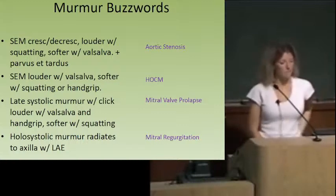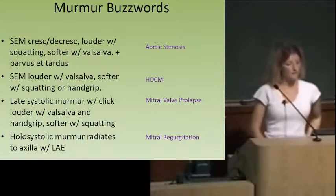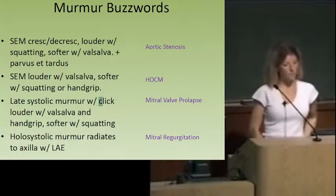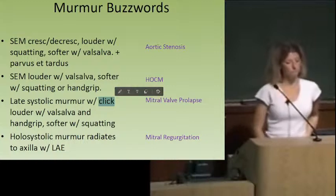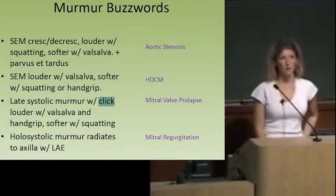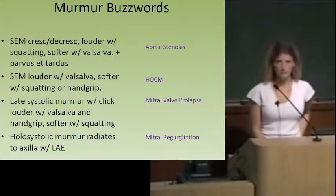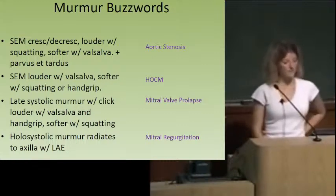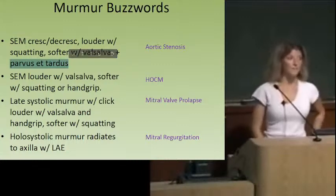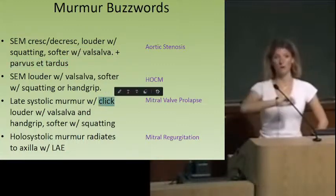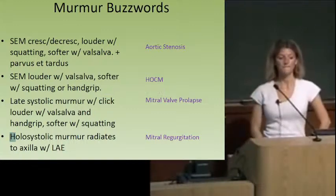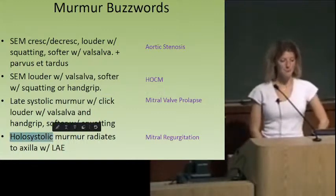The third murmur: late systolic murmur with a click, louder with Valsalva like HOCM, but softer with squatting. The key is the click. This is mitral valve prolapse — MVP. The patient might present with palpitations, some syncope, and the murmur can be pretty loud. The last systolic murmur radiates to the axilla and is holosystolic — not an ejection murmur. That's mitral regurgitation.